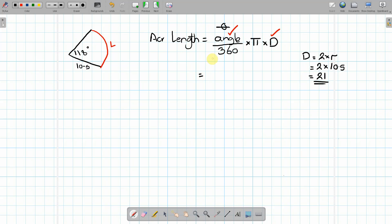So if we plug these numbers back in here, our angle is 118. Divide that by 360 times by pi and then times by the diameter which is 21. So if we plug this into the calculator we get 0.327 times by pi times by 21 and that will give us a final answer of an arc length of 21.6 and the units in this case is centimeters.